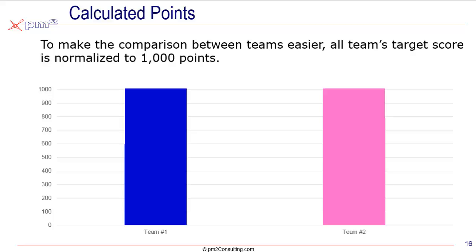To solve that problem, we normalize them. We take each of those scores and normalize them to 1,000 points, so both team 1 and team 2 are trying to achieve 1,000 points. In most cases, we set up the scorecard so the teams are roughly equivalent. But even if team 1 is twice as big and complicated as team 2, they're still normalized up to 1,000 points. When looking at team 2's results, you consider that in light of its relative size and priority compared to team 1. This way, it makes it easier for everyone to understand and compare teams. That's normalization.